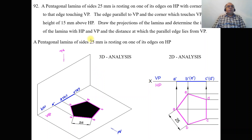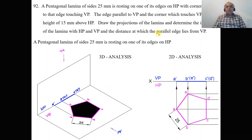We are going to take up one more problem on projections of laminas — how to analyze this by using 3D and also by using 2D, and how to solve the problem using this textbook. Problem number 92 reads: a pentagonal lamina of size 25 mm is resting on one of its edges on HP, with the corner opposite to that edge touching VP, the edge parallel to VP, and the corner which touches VP is at a height of 15 mm above HP. Draw the projections of the lamina and determine the inclination of the lamina with HP and VP, and the distance at which the parallel edge lies from VP.